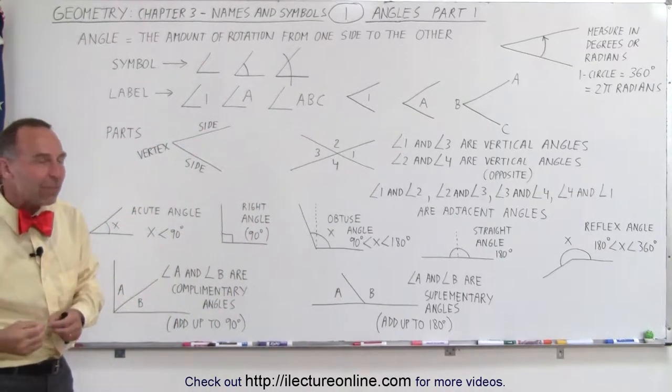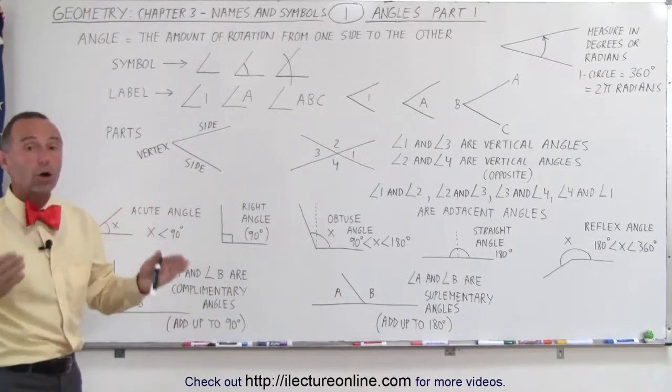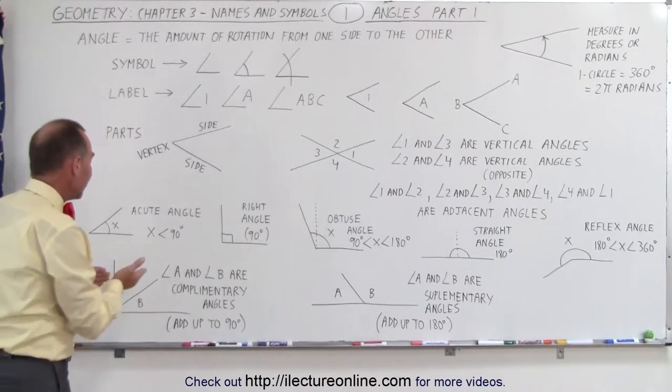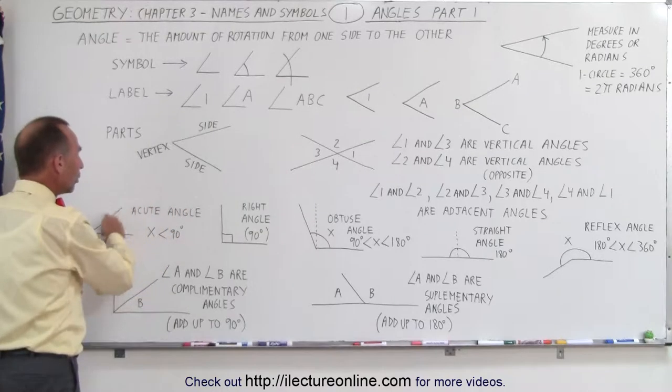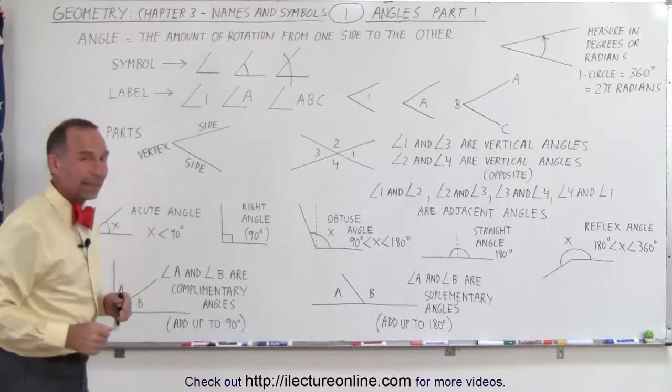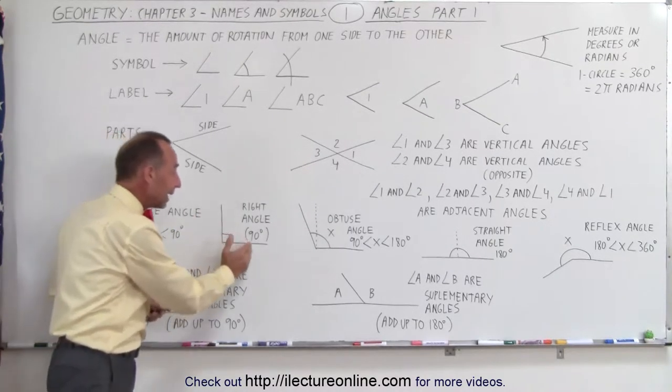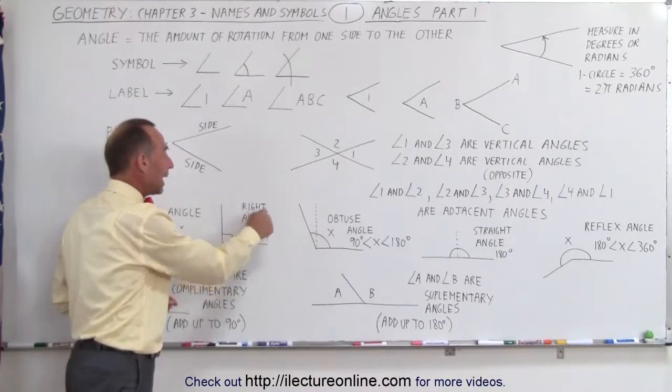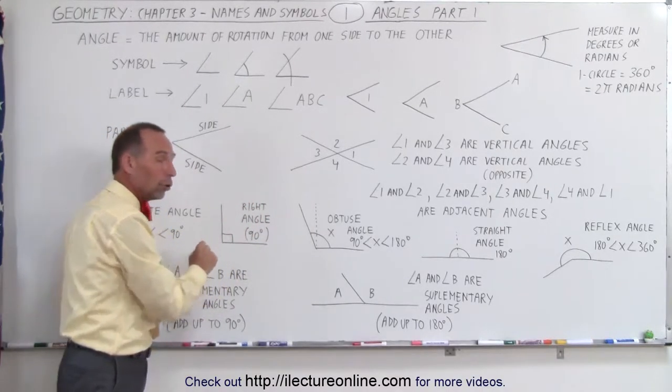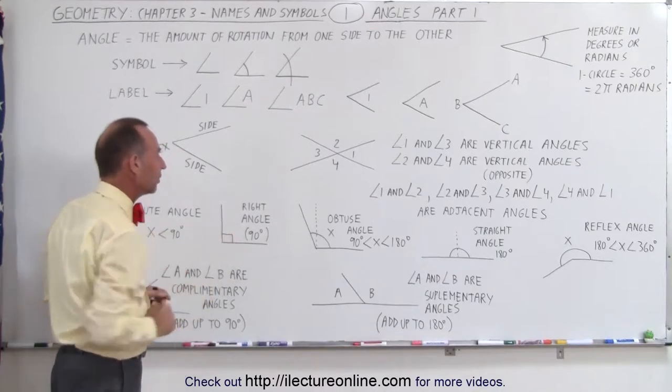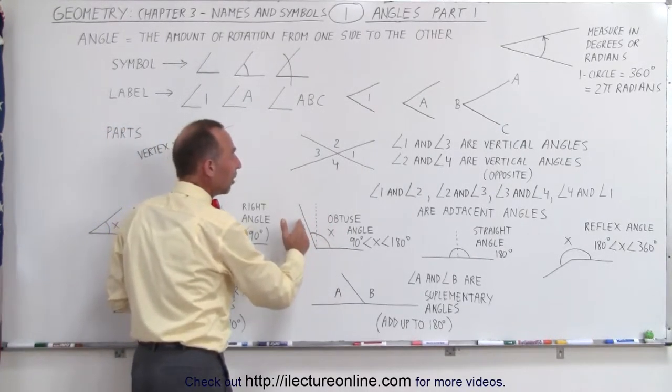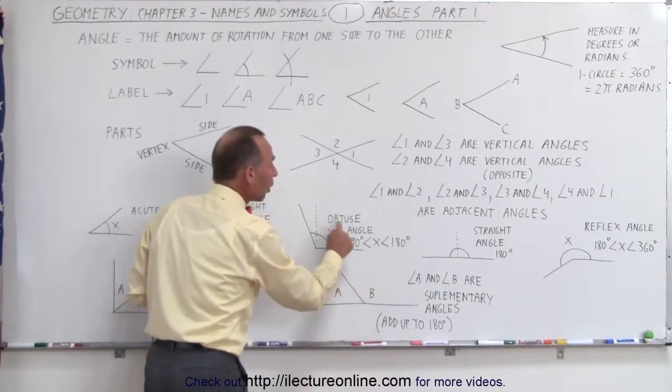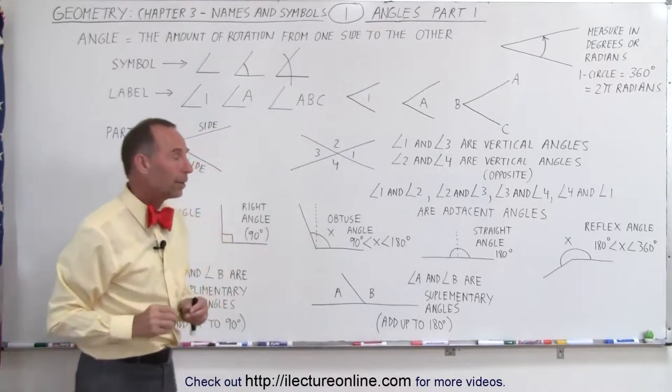We also have special names for angles depending upon how large the angle is. If the angular size is less than 90 degrees, we call them acute angles. If the angle is exactly 90 degrees, we call it a right angle. And we use this little symbol here to notate that it's a right angle, that the angle is 90 degrees. If the angle is greater than 90 degrees, but less than 180 degrees, we call it an obtuse angle.